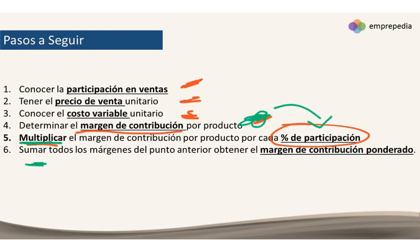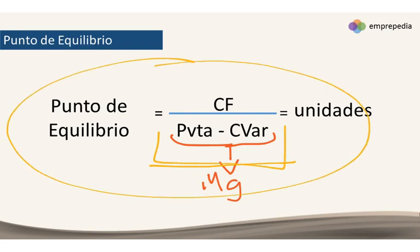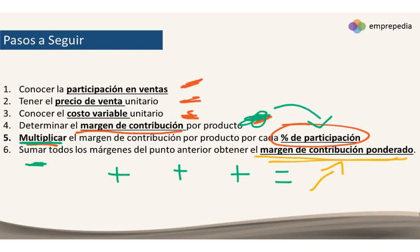Esos pequeños resultados del paso 5 los vamos a sumar todos para obtener, ahora sí, el margen de contribución ponderado. Este margen que vamos a obtener es básicamente el que va a ir en la fórmula. Sigue siendo la misma fórmula; como son varios productos, esto es lo que cambia.